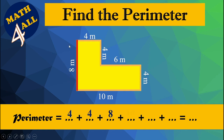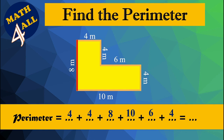Now we have all the sides — let's add them. The perimeter is the length of all the outer sides. Four plus four plus eight equals sixteen, plus ten equals twenty-six, plus six equals thirty-two, plus four equals thirty-six. The perimeter is 36 meters. And this was our lesson — thank you.